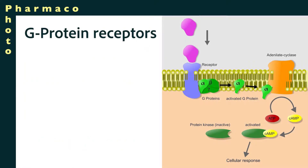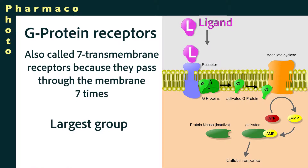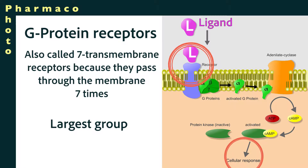G protein receptors are membrane-bound receptors, also called seven transmembrane receptors, and they're the largest and most diverse group of membrane receptors. Binding of the ligand, or of a medication mimicking the ligand, results in the generation of a second messenger which is involved in cellular signaling.